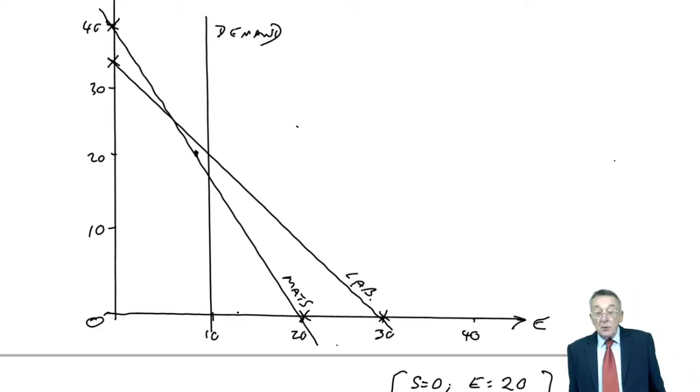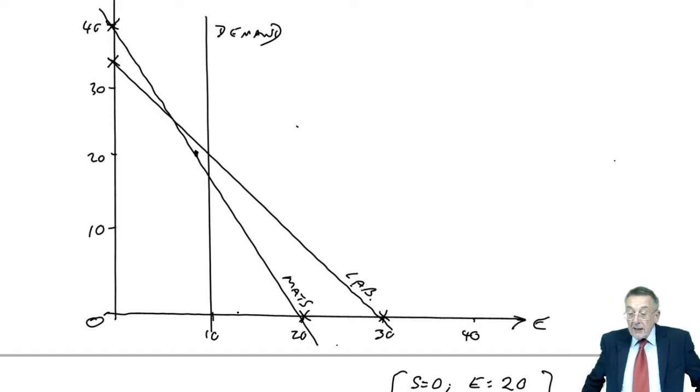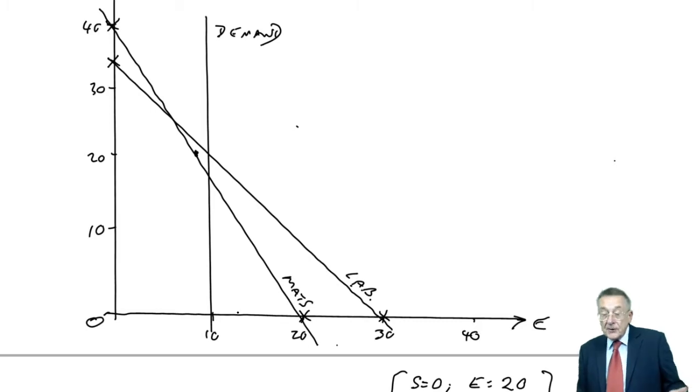But what's important, of course, is that not only must we be on or below the materials line, but we've also got to be on or below the labour line. And we've also got to be on or to the left on the demand line, which limits us. For instance, you see, we can't have a point there because although we're OK for labour, we're using less than the limit, we're using too much material and the demand's too high.